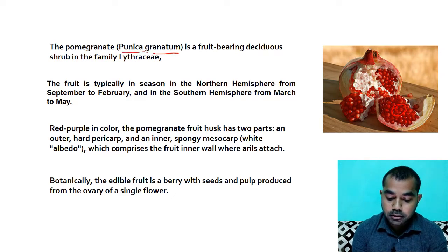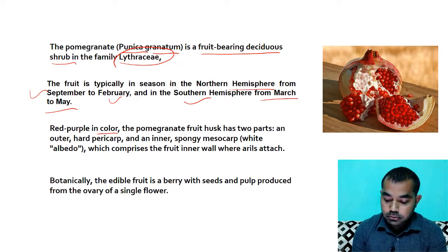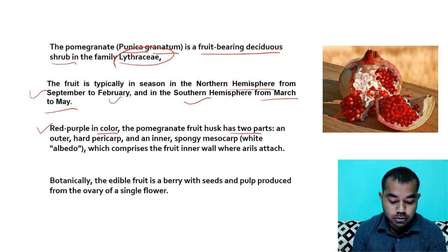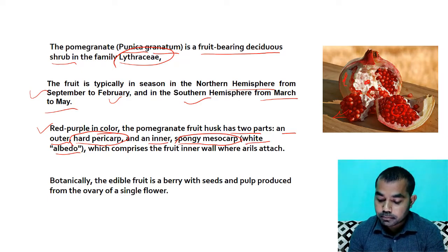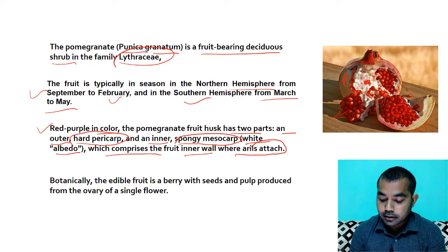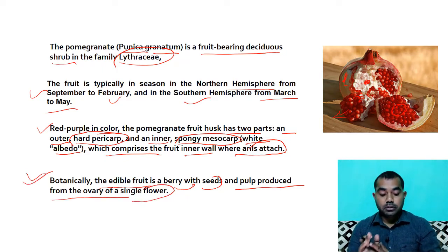Botanically, pomegranate is known as Punica granatum, a fruit-bearing shrub in the family Lythraceae. The season in the northern hemisphere is from September to February, and in the southern hemisphere from March to May. The aril is red-purple in color. The pomegranate has two parts: the outer hard pericarp and the inner spongy mesocarp or white albedo. The aril attaches at the mesocarp. Botanically, the edible fruit is a berry with seeds, with pulp produced from the ovary of a single flower.